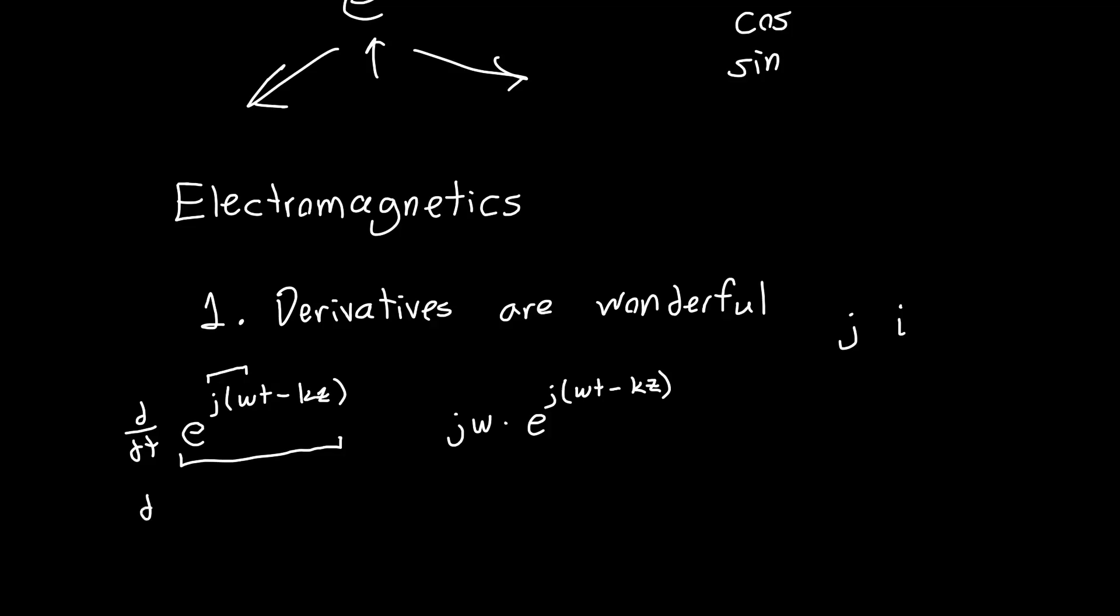Now if you want to take derivatives in space, no problem. Same thing. If you want to take the derivative of this, this just becomes now minus jk. The thing in front of the z, which is in this case minus jk. And then you've still got your original solution.